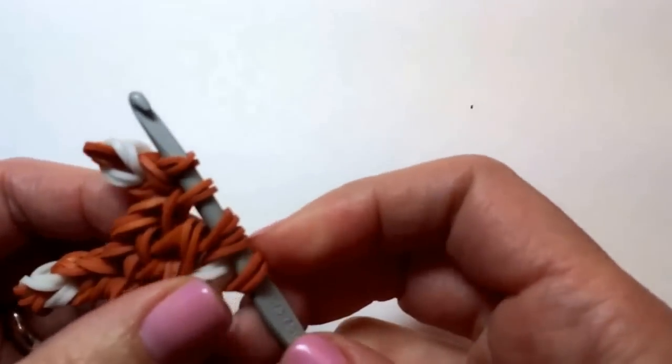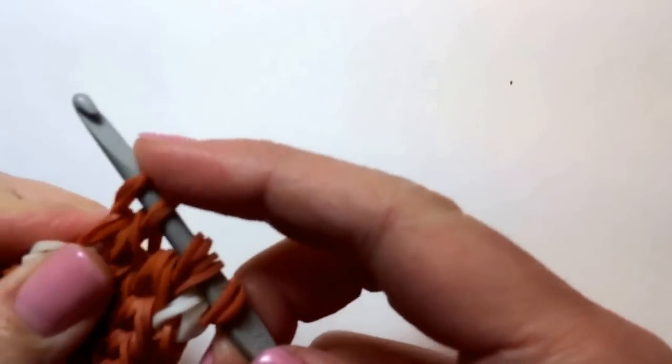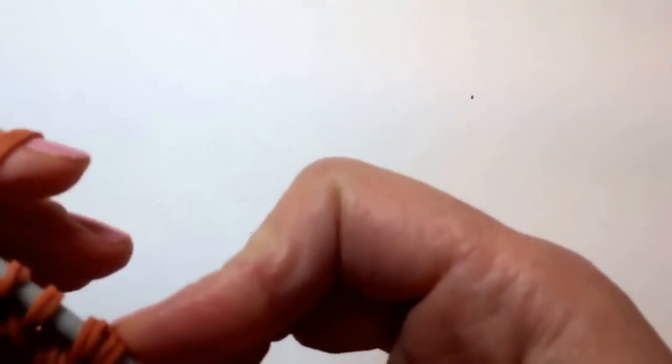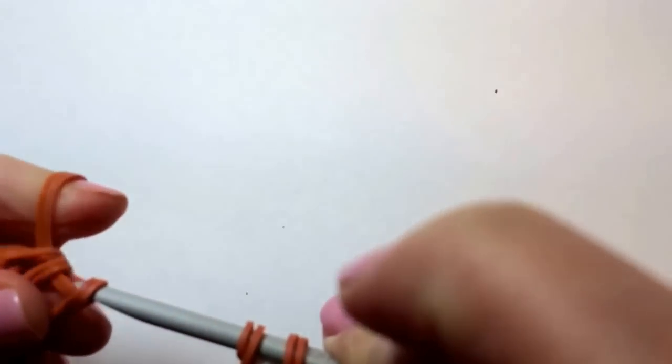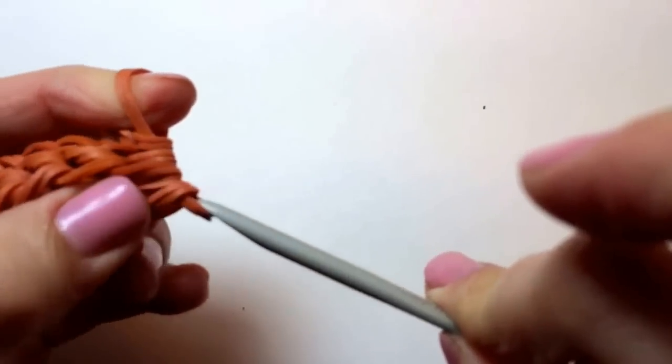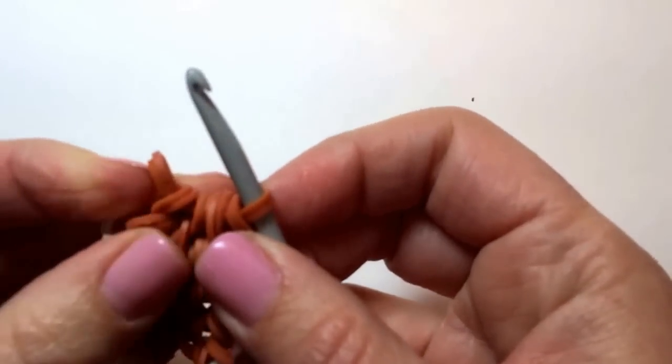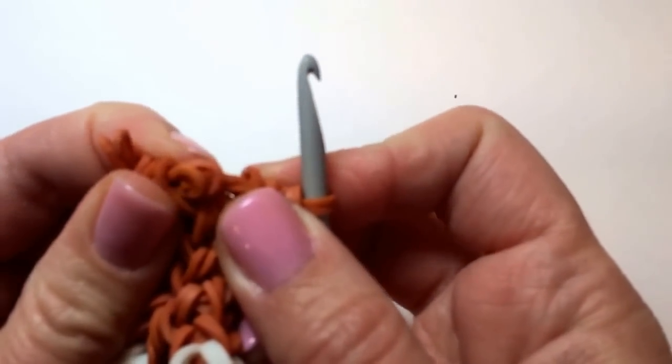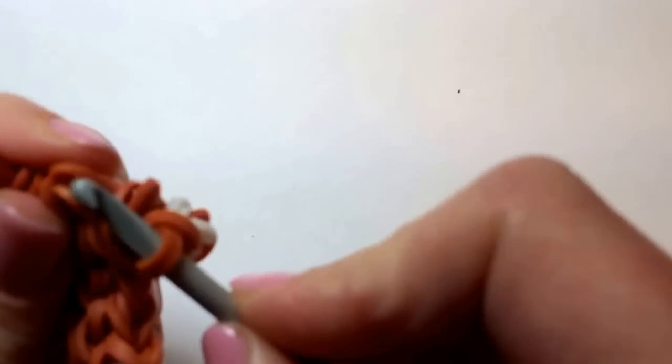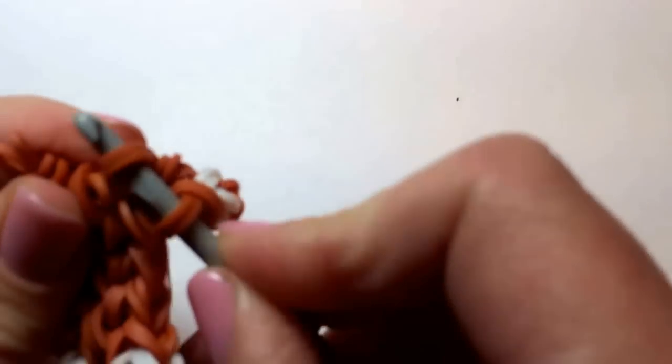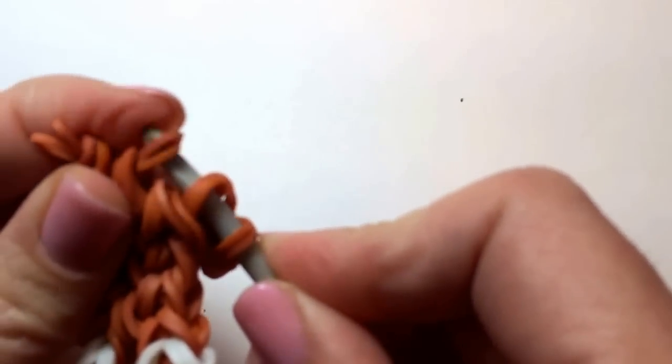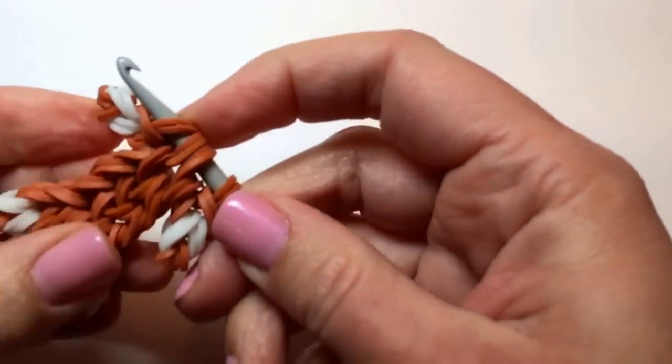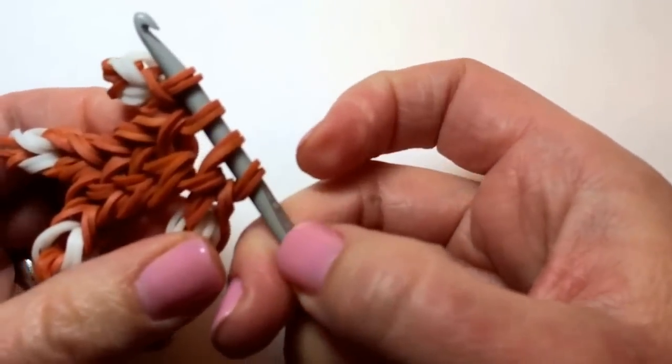And now we need to construct the other shoulder. And we're going to be passing through these two loops to get to the other side. So to start, we'll bring it through all of them. And then we're going to let those top two pop out and re-hook them. So now we've constructed our shoulders.